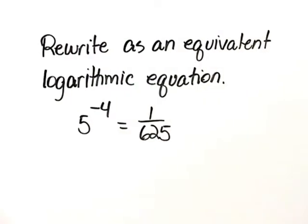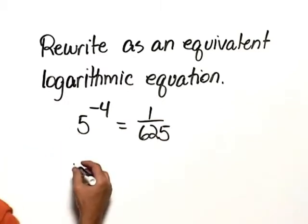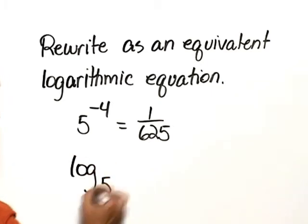Rewrite as an equivalent logarithmic equation: 5 raised to the negative 4 equals 1 over 625. Recall that when we go between a logarithmic equation and an exponential equation, the base remains the same. So we're going to have log base 5.